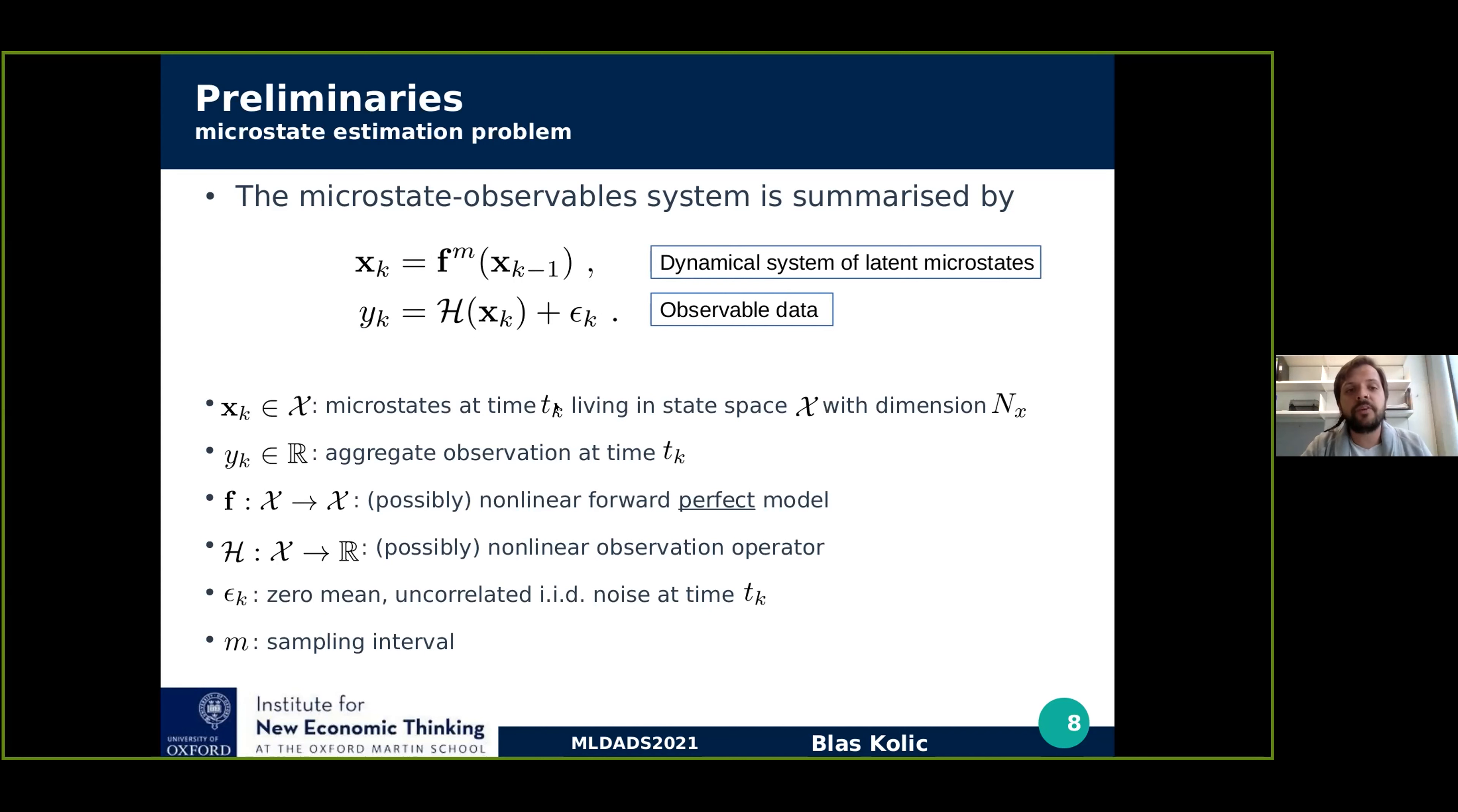Just to be clear in the notation, xk are the microstates at time tk, and they live in a state space x of dimension nx. The dimension is typically high dimensional, and the observations yk are real numbers. F is the model, possibly non-linear forward perfect model. We assume that we know the parameters for this work, so the model is perfect. And a possibly non-linear observation operator. Then epsilon is the noise, which is zero mean uncorrelated and iid. And m in the exponent is the sampling interval. It's a quantity that connects the micro world with the macro world. Because many times we can take observations not at every update of the microstates, but every now and then. So m, the higher m is, the more sparse are going to be the observations.